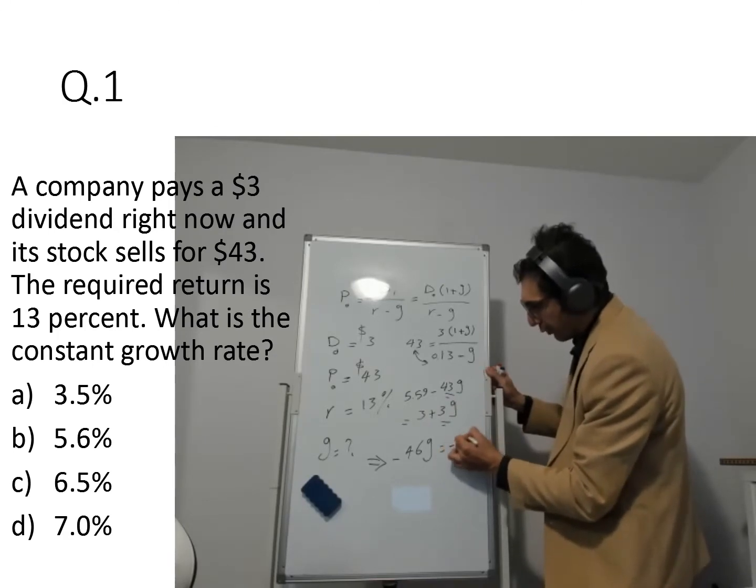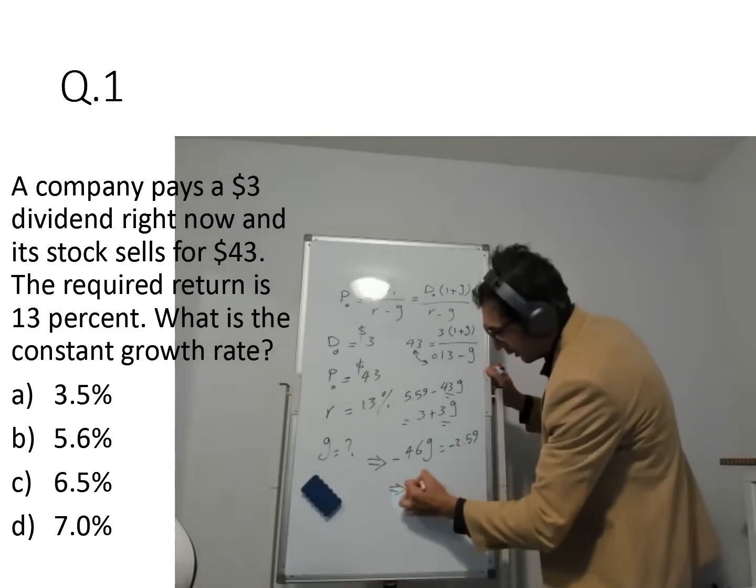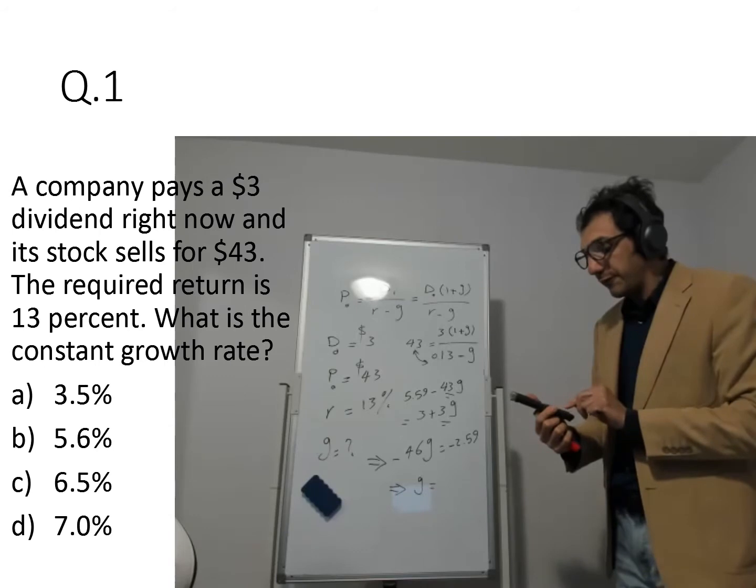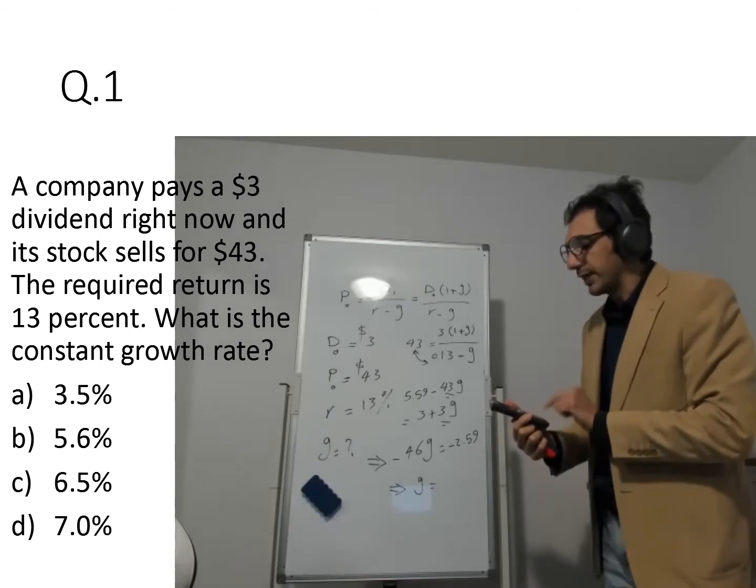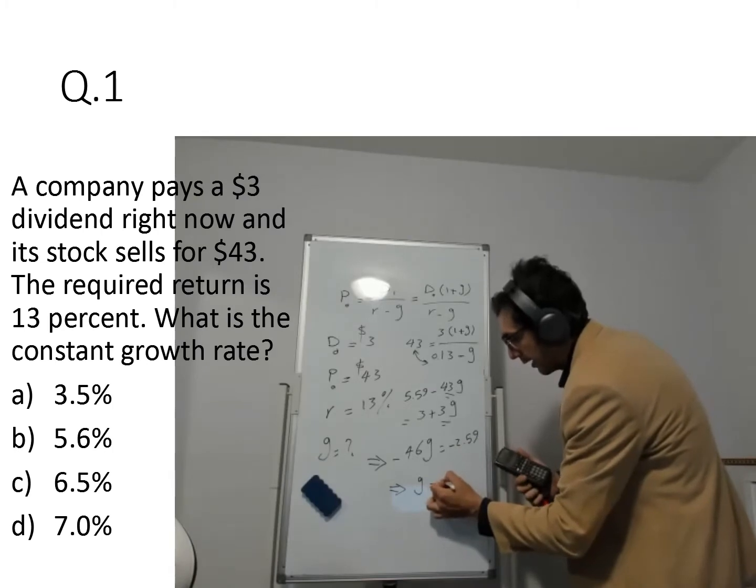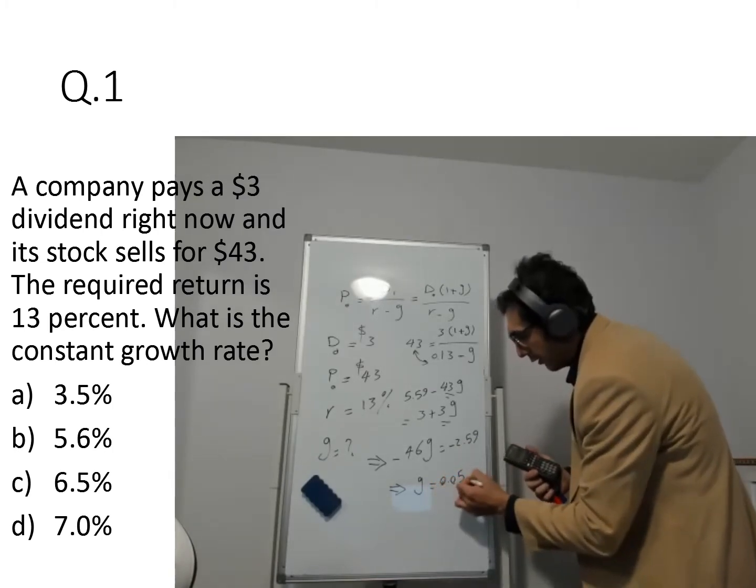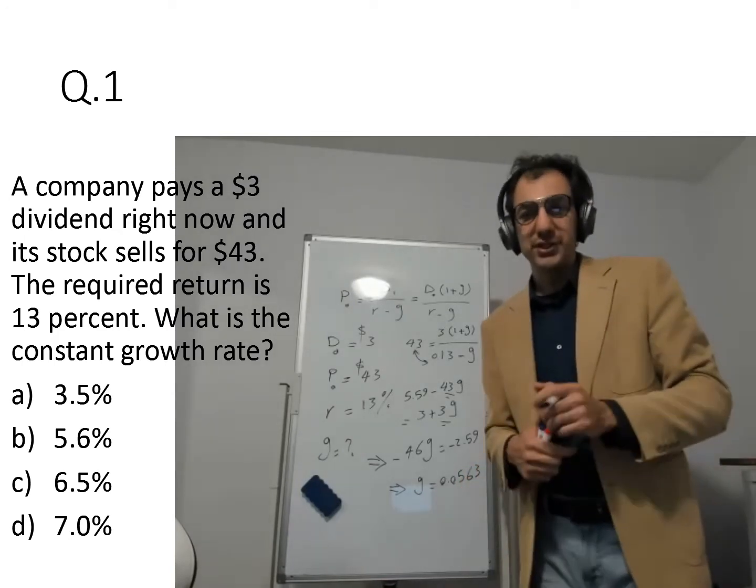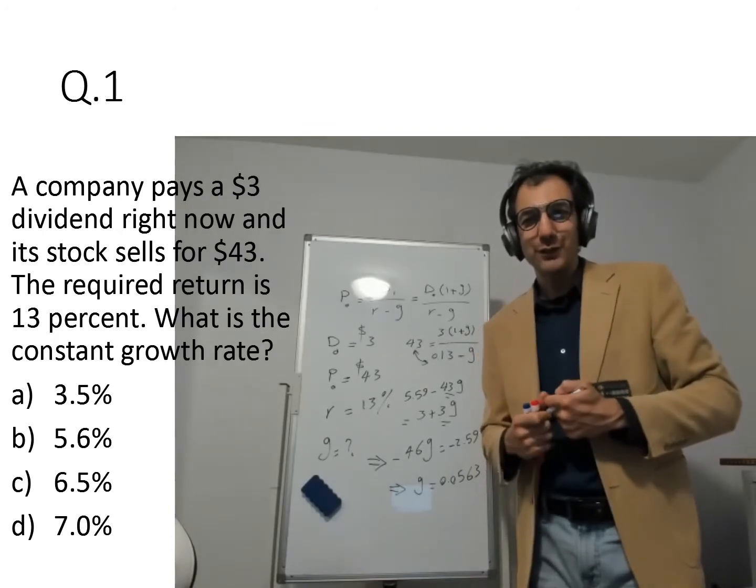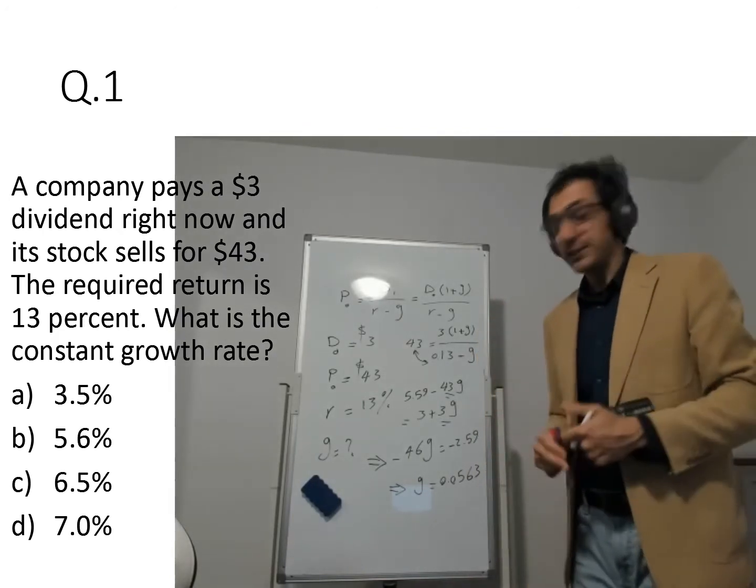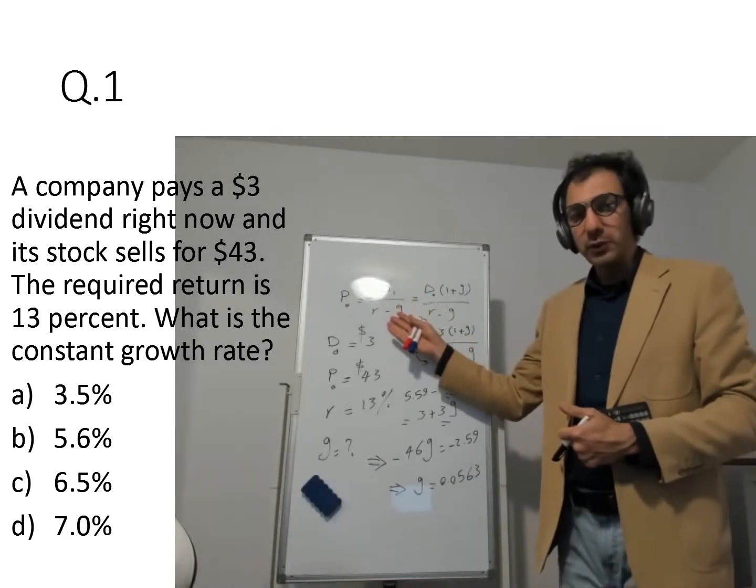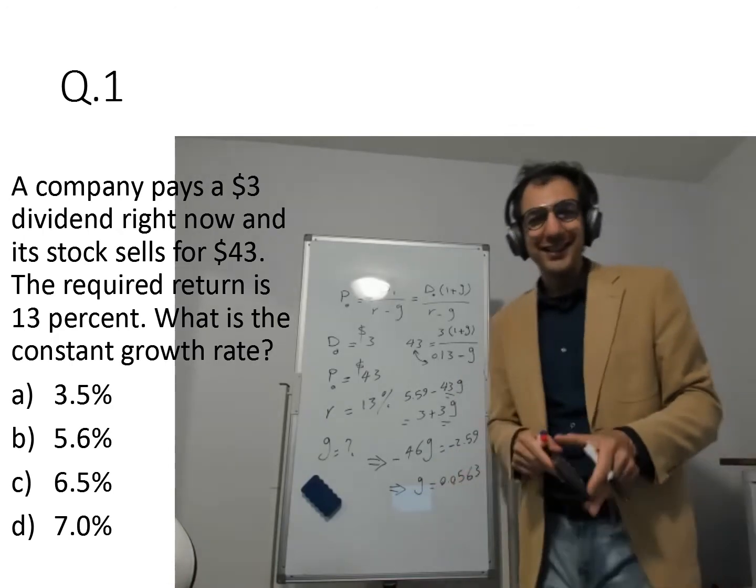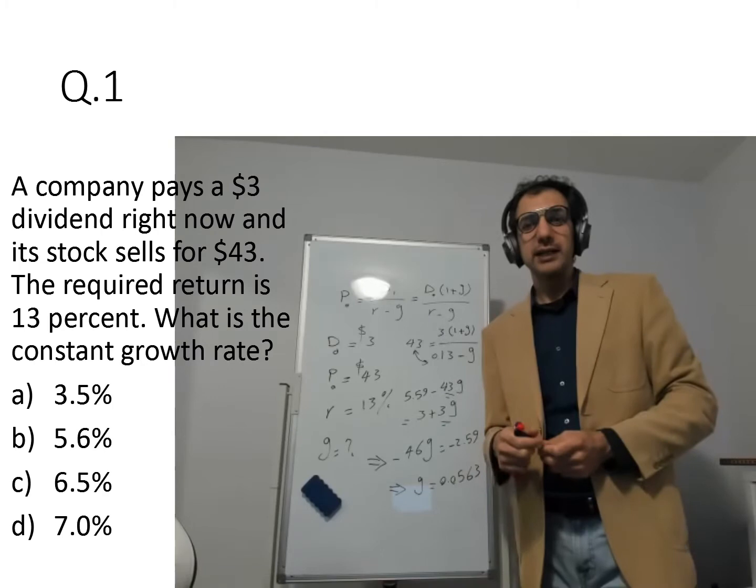And I'm taking 5.59 to the left side of the equation. So this becomes minus. So it's minus 2.59. And from here, the G becomes, you have to divide 2.59 by 46. So this gives me G as 0.0563, or it's 5.63%. And if you look at the options, the closest one is 5.6%. So the answer should be B. So again, we used the Gordon formula. I rearranged the formula to actually find the G and based on that, the G should be 5.6%. Now let's look at the next question.